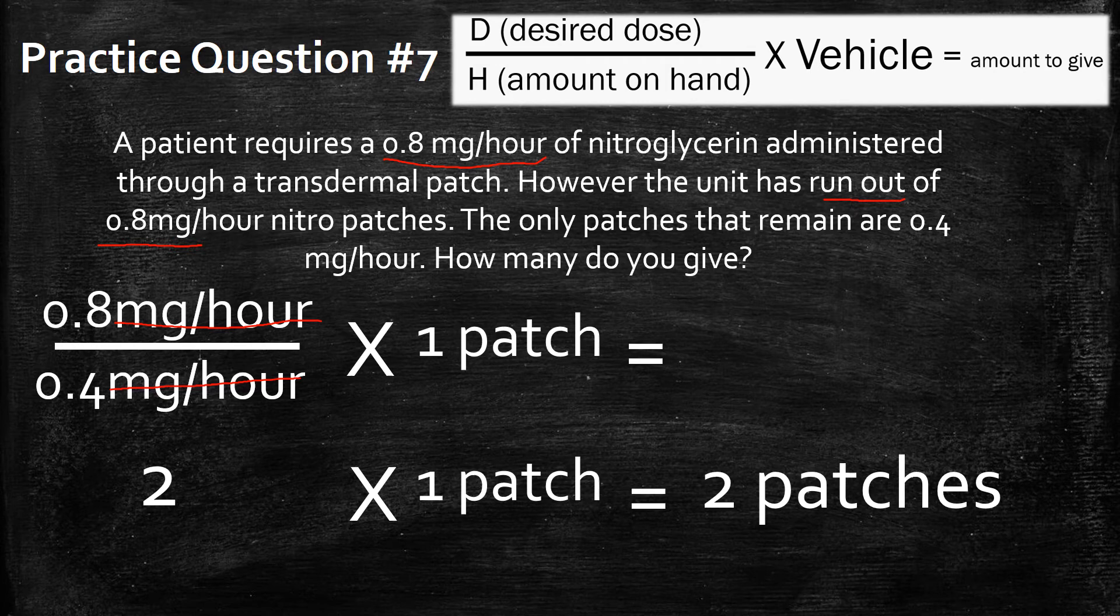So in this circumstance, in order to give this patient 0.8 mg per hour of nitroglycerin, you're going to give them 2 of the patches that are 0.4 mg per hour.